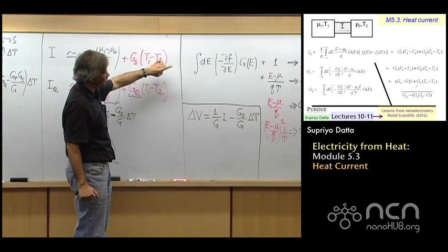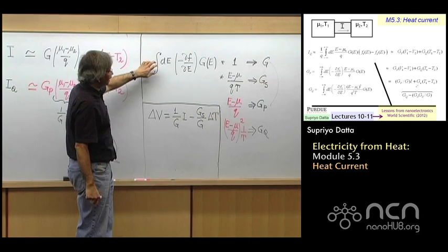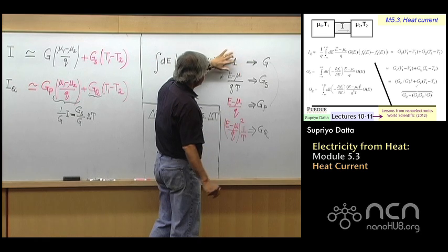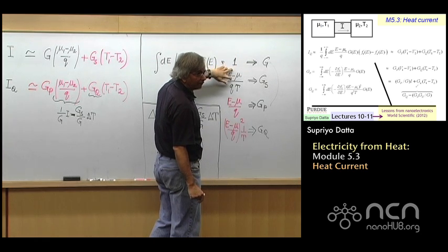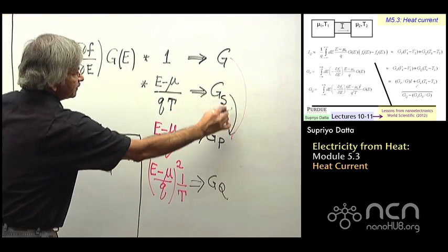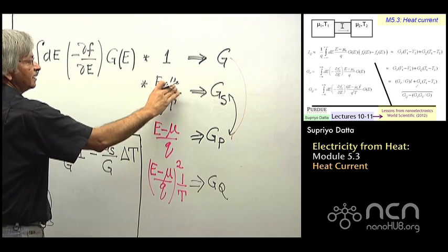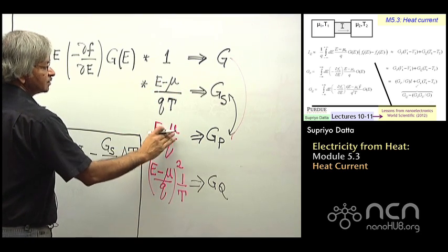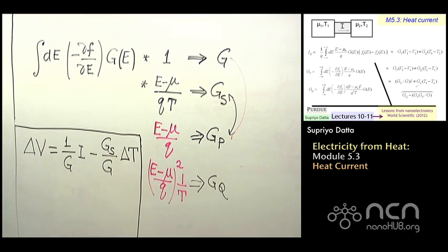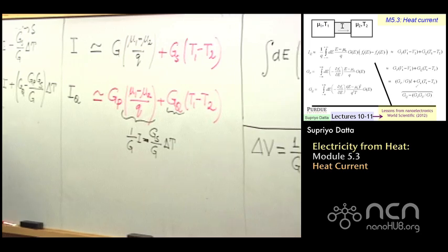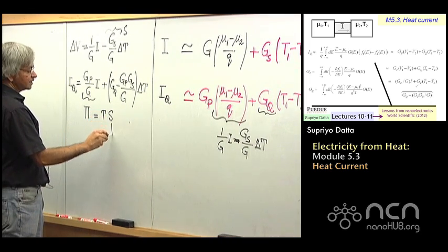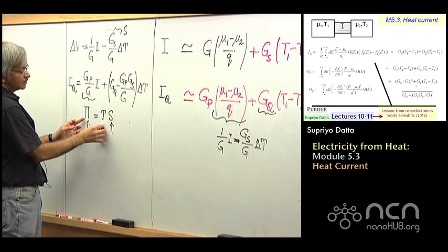And if you look at our expressions from before that we had up here, if you look at these expressions, you'll see out here that Gs and G actually have a temperature between them. That is, when you look at Gs and Gp, this involves E minus mu over Qt and Gp involves E minus mu over Q. And so Gp is equal to T times Gs. And so this pi will be equal to T times S. This is the Seebeck coefficient, this is the Peltier coefficient, and this is the temperature.